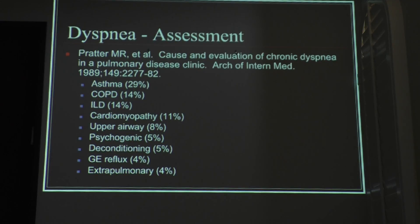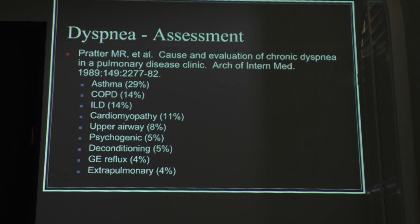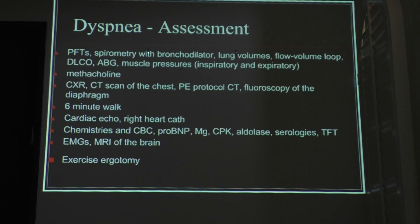Extra-pulmonary causes are usually like neuromuscular syndromes, or a patient presenting with diaphragmatic paralysis, or a patient so heavy like the Pickwickian type of syndrome — it's a restricted lung disease pattern because there's so much fat and tissue causing impairment. It's not necessarily related to the lungs themselves, but it's extra-pulmonary.